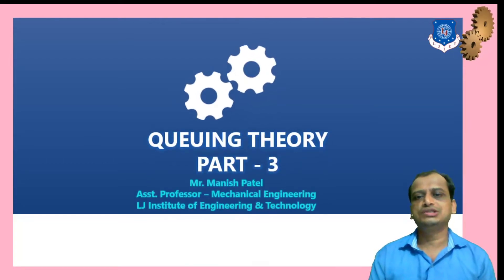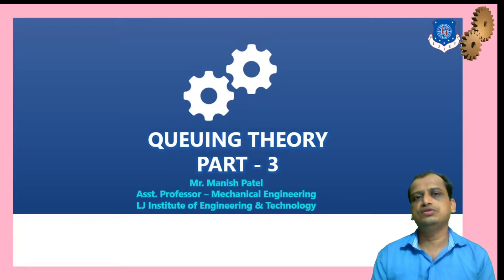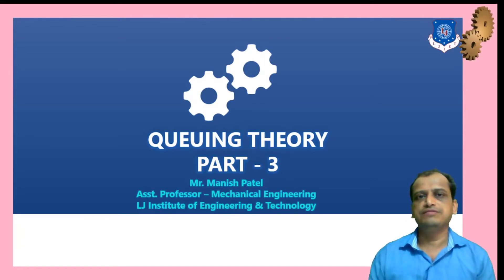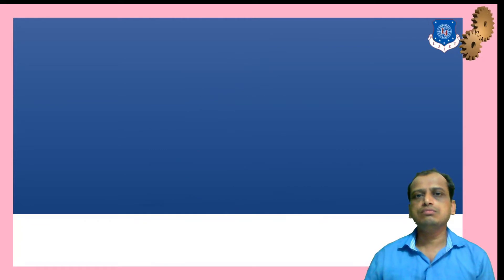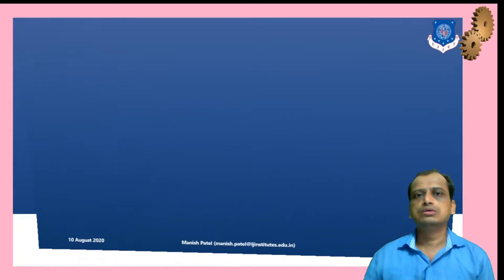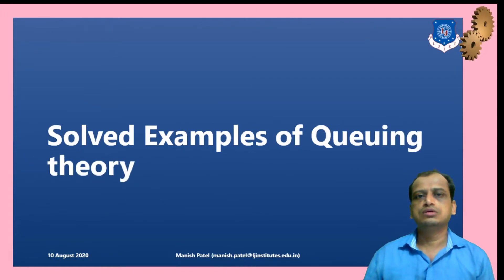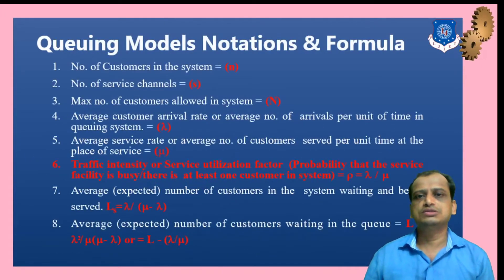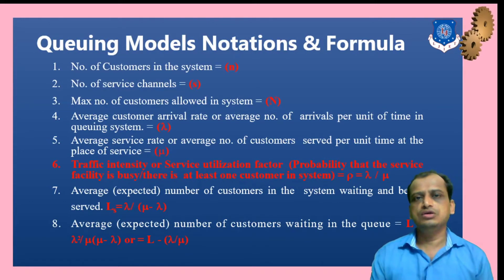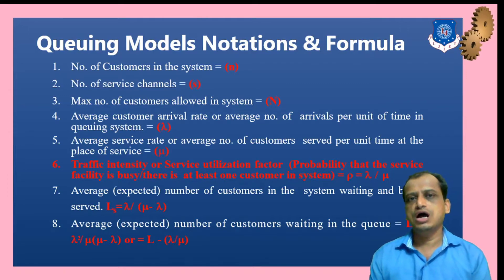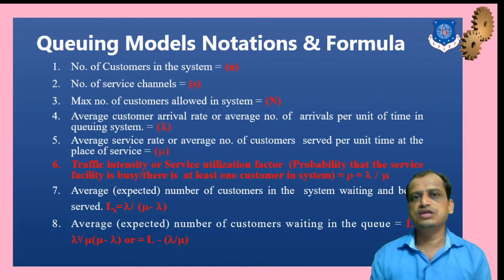In this lecture, Part 3 of Queuing Theory, we are going to look into examples and solve some problems based on the model discussed in the previous lecture. Let's start by reviewing the previous concepts — the notations and formulas of queuing theory. I have quickly summarized all of these with the help of notations only.